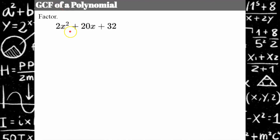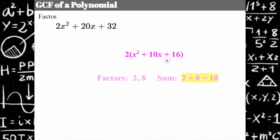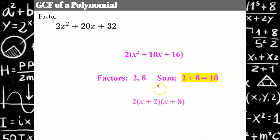Here's one that has a step one. This trinomial — all three terms have a greatest common factor of 2. When you have a GCF in step one, you need to factor it out. Now that I've factored it out, we have a trinomial with a leading coefficient of 1. A times C is 1 times 16, which is 16. Factors of 16 that give a sum of 10: 2 times 8 is 16 and 2 plus 8 is 10. So it works out to 2 multiplied by x plus 2 multiplied by x plus 8. The trick is to keep your greatest common factor out front.